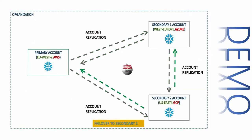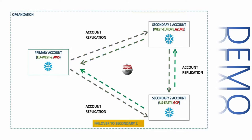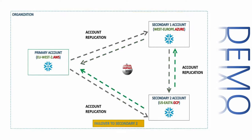Let's start with the demo. As you can see in this picture, I have three different accounts in my organization. My primary account is in Europe West AWS, my secondary account is in West Europe Azure, and my secondary two account is in US East GCP. So within a single organization, I have three different accounts on three different service providers in their respective different regions. We are going to see how we can enable replication from my primary account to both secondary accounts.